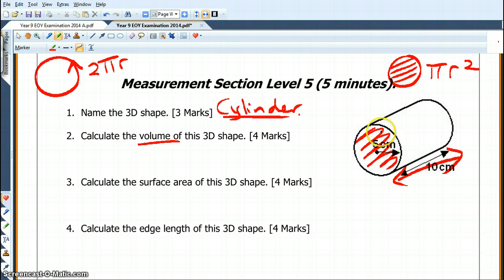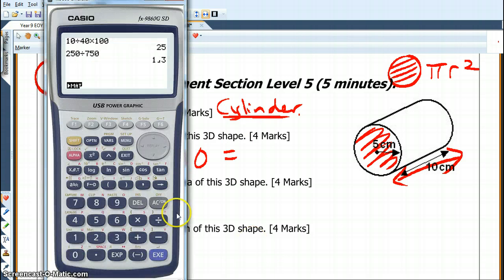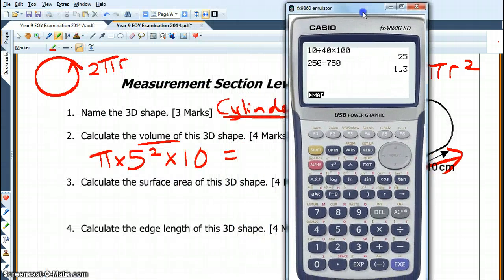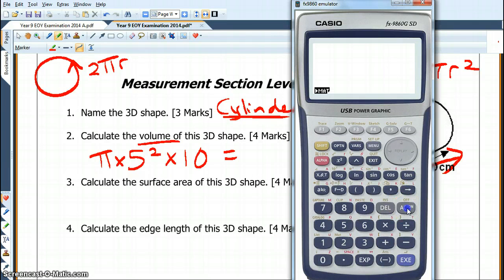So the area of this circle is pi times the radius squared, and then we need to times by the length. So how do we do that on our calculator? If your calculator doesn't have pi, use 3.14.